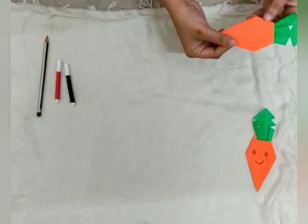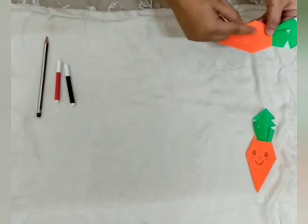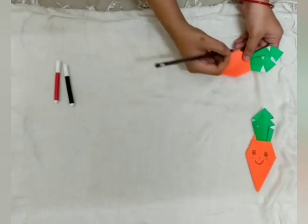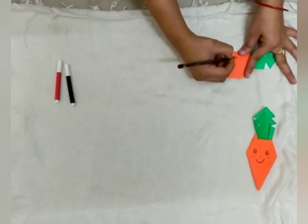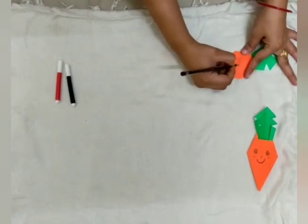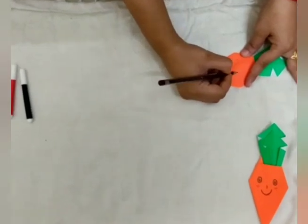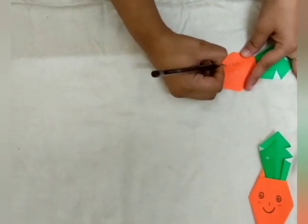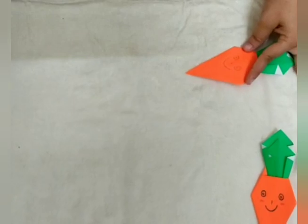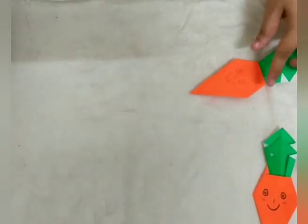See? Now this time we will make face. So, we will take pencil and we will make face. Now what's? Our smiley carrot.